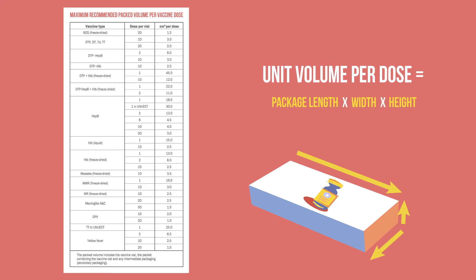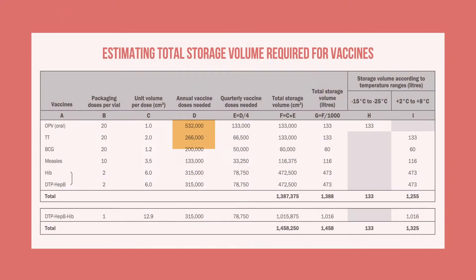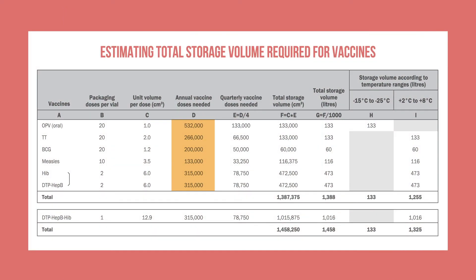Then divide that number by the number of doses, which is the number of vials multiplied by the doses per vial. Next, record the expected doses to be stored annually for each vaccine. In this example, 266,000 doses of TT are expected. Remember, there are different ways to calculate your annual needs depending on your level and your program.